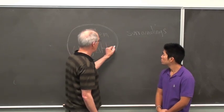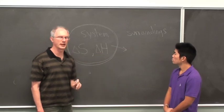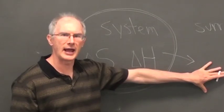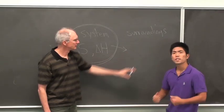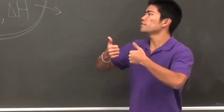Right, so enthalpy. If I talk about heat going from the system to the surroundings, how does that affect the entropy of the surroundings? Well, that's going to increase the entropy of the surroundings because increased temperatures increase entropy.